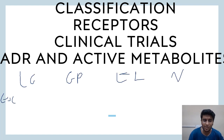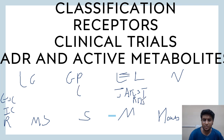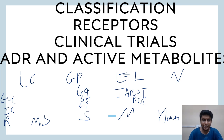Know receptor response times: milliseconds, seconds, minutes, and hours. Know ligand-gated, voltage-gated, and ion-gated channels. Important signaling pathways include the JAK-STAT pathway, receptor tyrosine kinase pathway, and G-protein subtypes — Gq, Gi, Gs, Go — and which ones activate or inhibit adenylyl cyclase. For G-protein-coupled receptors, know the cAMP pathway.